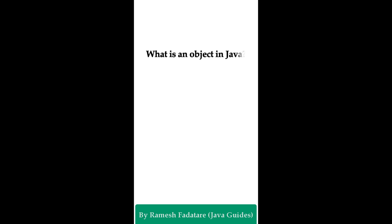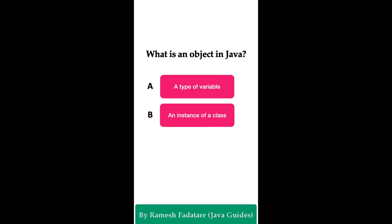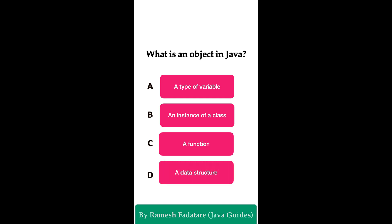Welcome to Java Quiz Series. Here is one more question: What is an object in Java? Option A: a type of a variable. Option B: an instance of a class. Option C: a function. Option D: a data structure. You have five seconds to answer this question.